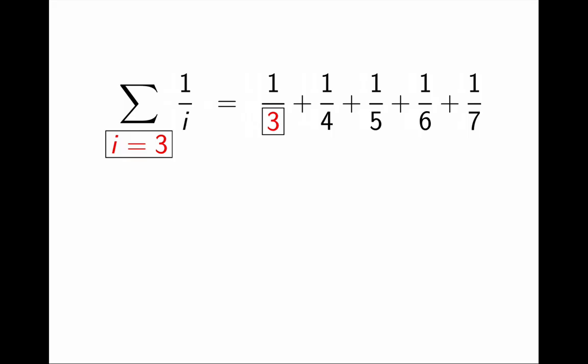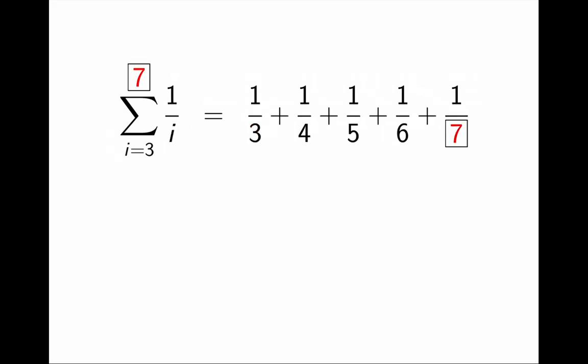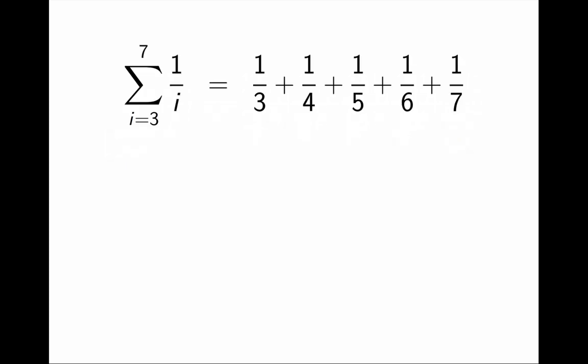And then, for all the other terms, i keeps increasing by 1 each time, until the last value, which is 7. I indicate this by writing 7 on top of the sigma. i equals 7 is the last value. And that's it. That is how I write a sum in a compact way.